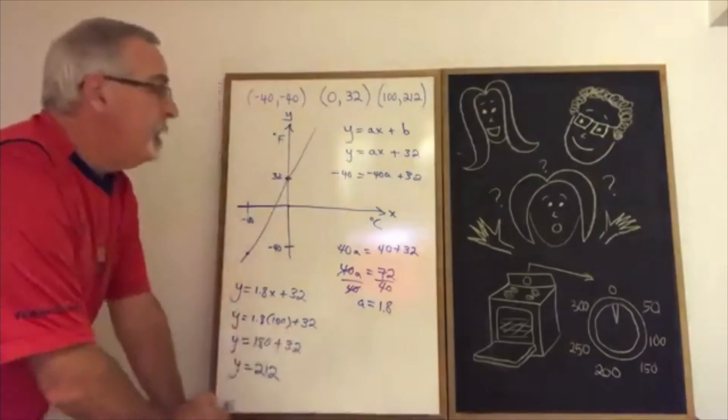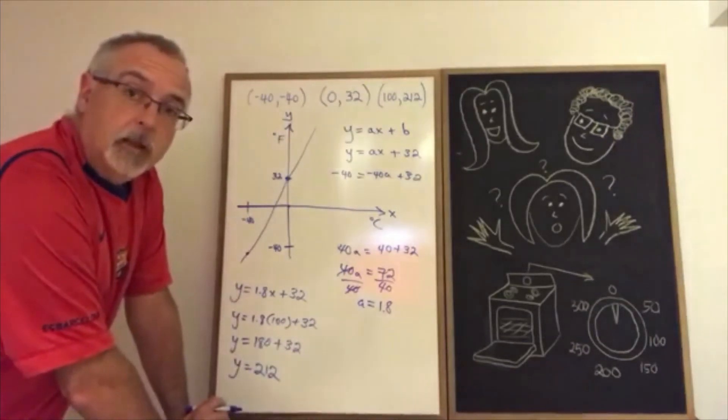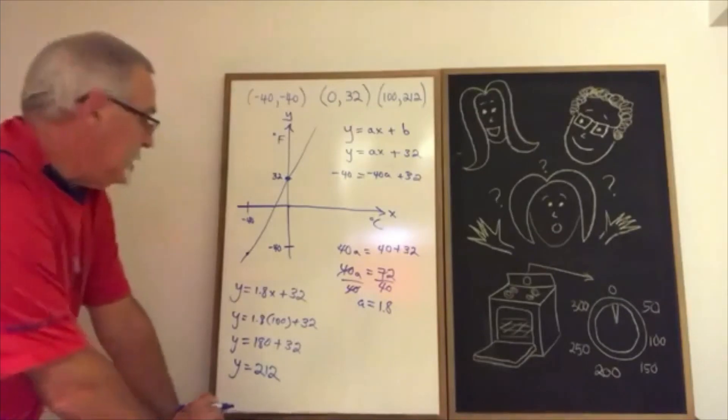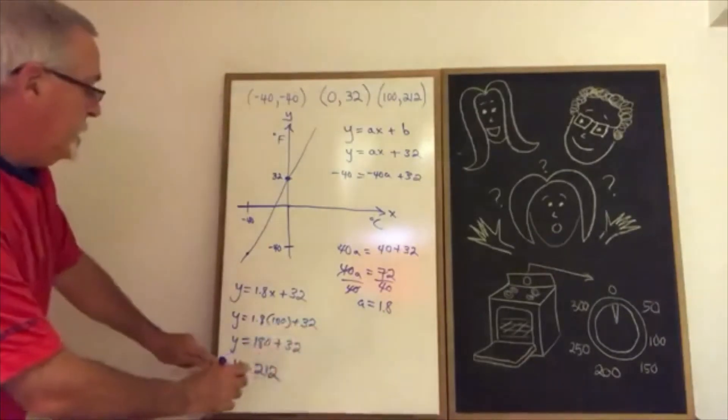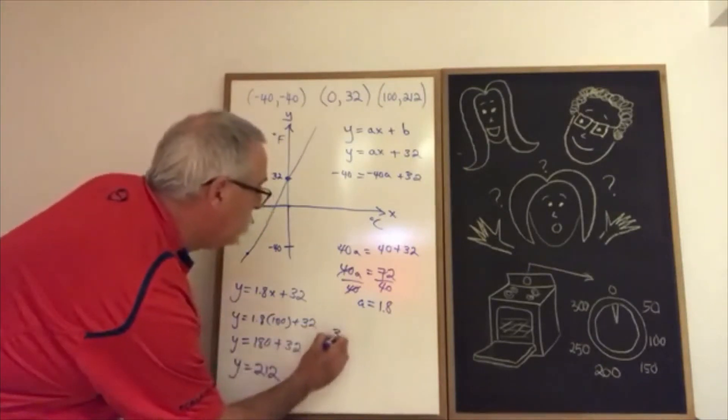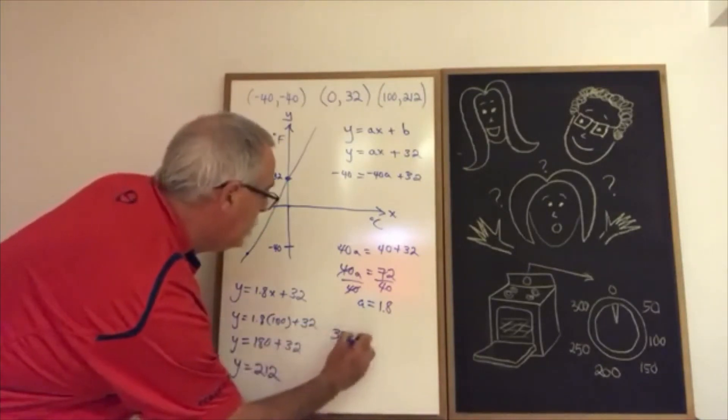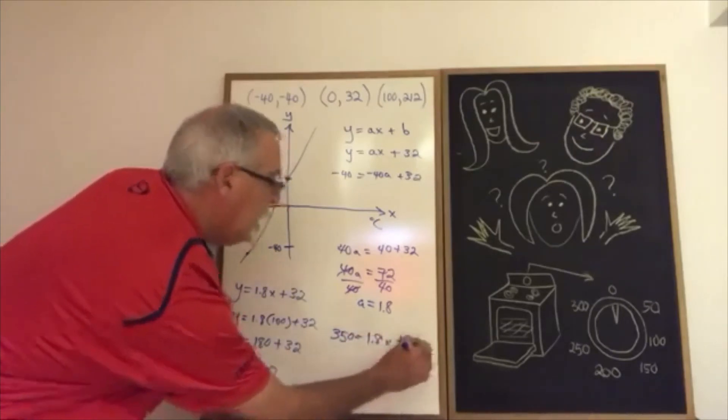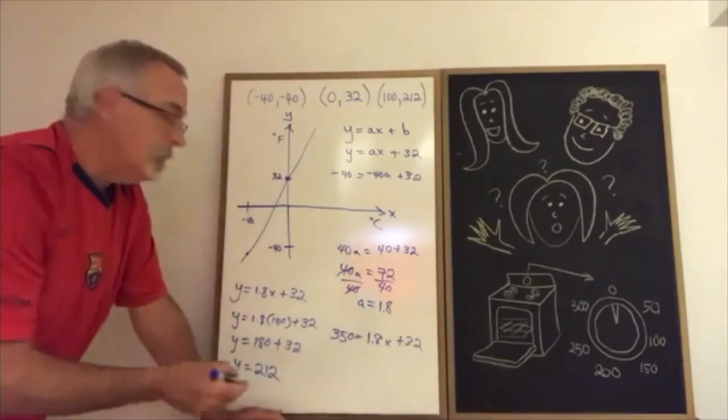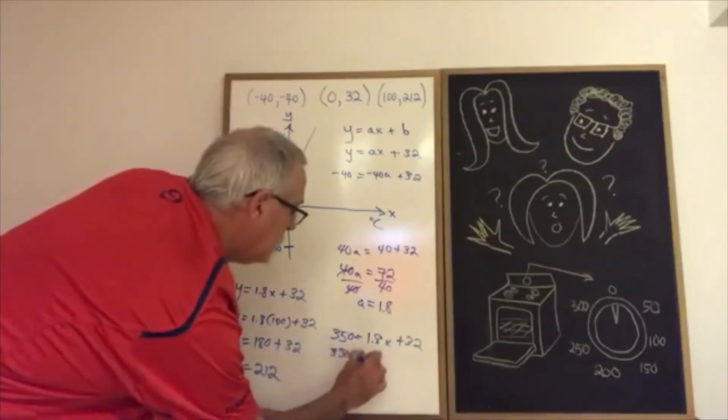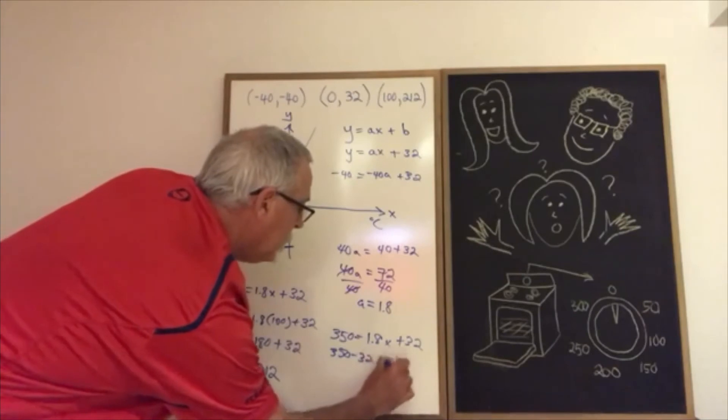Now I'm going to plug in the question that my sister-in-law asked me at the beginning: what is 350 Fahrenheit in Celsius? Well, the Fahrenheit is the y, so I'm replacing the y with 350. Now I just have to solve for x and I can answer the question. 350 minus 32 equals 1.8x.